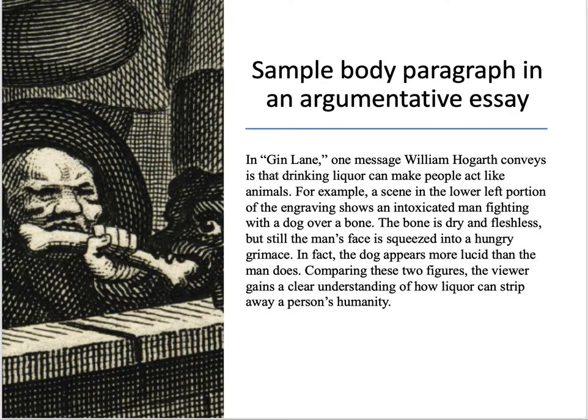In Gin Lane, one message William Hogarth conveys is that drinking liquor can make people act like animals. For example, a scene in the lower left portion of the engraving shows an intoxicated man fighting with a dog over a bone. The bone is dry and fleshless, but still the man's face is squeezed into a hungry grimace. In fact, the dog appears more lucid than the man does. Comparing these two figures, the viewer gains a clear understanding of how liquor can strip away a person's humanity.